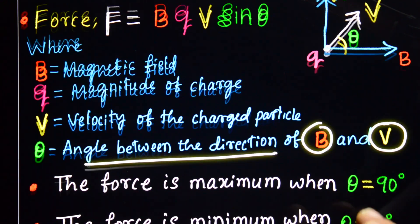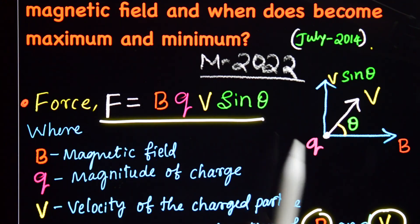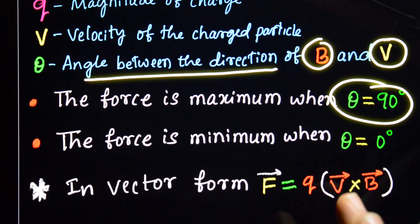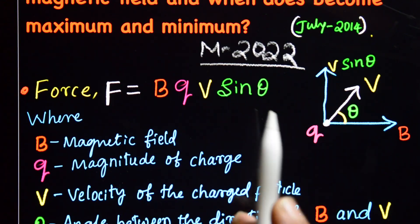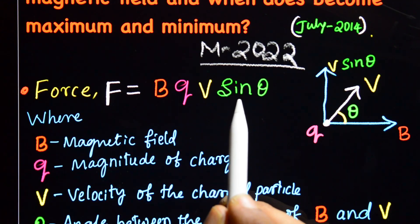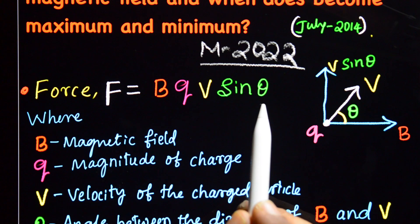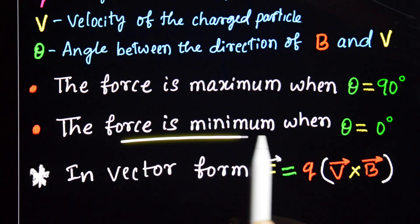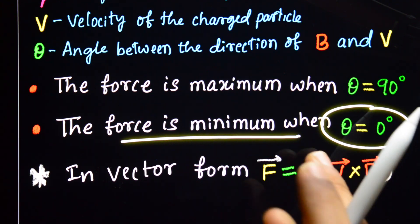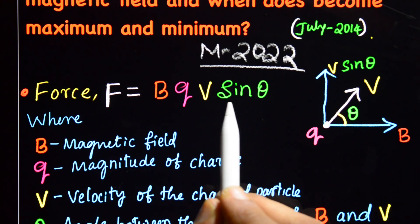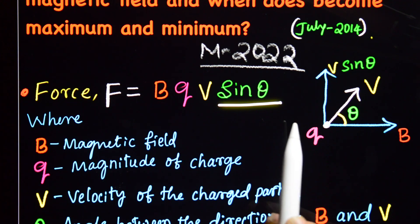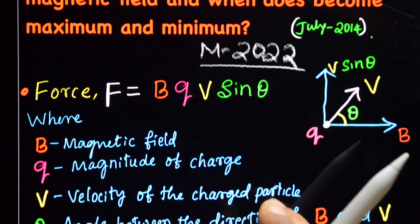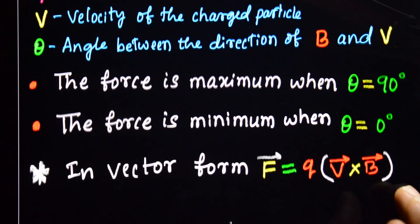The force becomes maximum when θ is equal to 90°. Force will be maximum because sine of 90° is equals to 1, that is maximum. And force is minimum when θ is equal to 0°. When θ is equal to 0°, sine of 0° is 0, that is minimum.